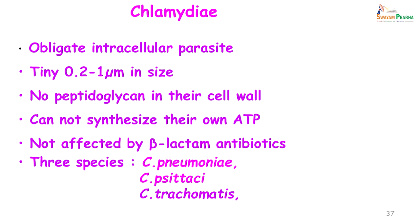Chlamydia: these are obligate intracellular parasites, 0.2 to 1 micron in size. Their cell wall is rich in lipopolysaccharide; however, it lacks peptidoglycan. They cannot synthesize their own ATP and these organisms are not affected by beta-lactam antibiotics. There are three main species which can cause pneumonia: Chlamydophila pneumoniae, Chlamydophila psittaci and Chlamydia trachomatis. Chlamydia trachomatis is more famous for causing sexually transmitted diseases as well as trachoma; Chlamydia trachomatis pneumonia is seen in infants born to mothers who have the infection in their genital tract.